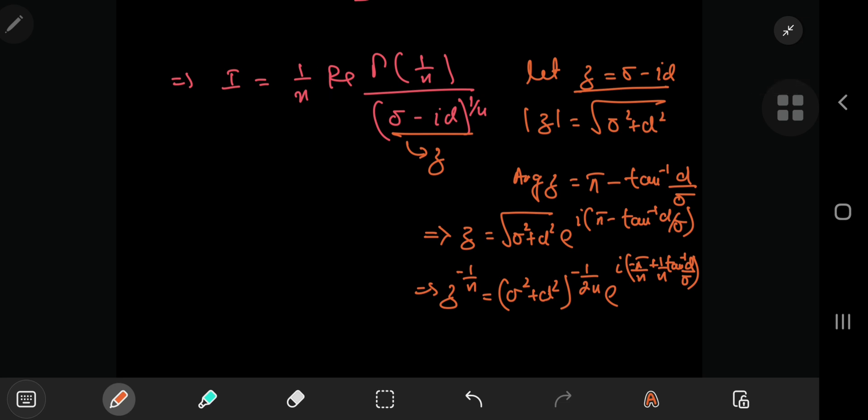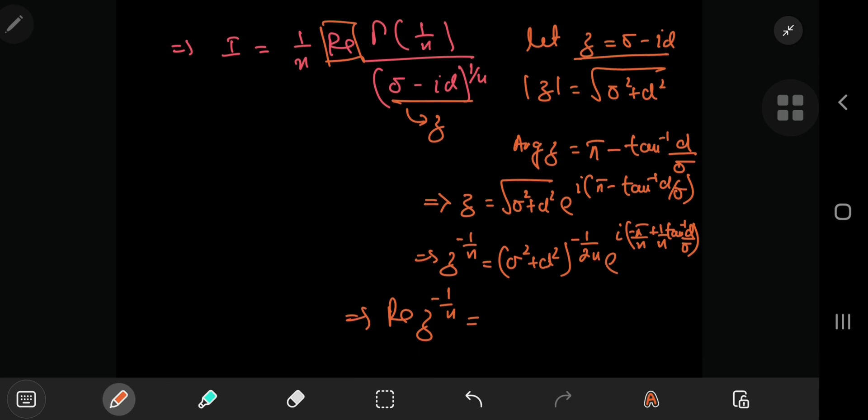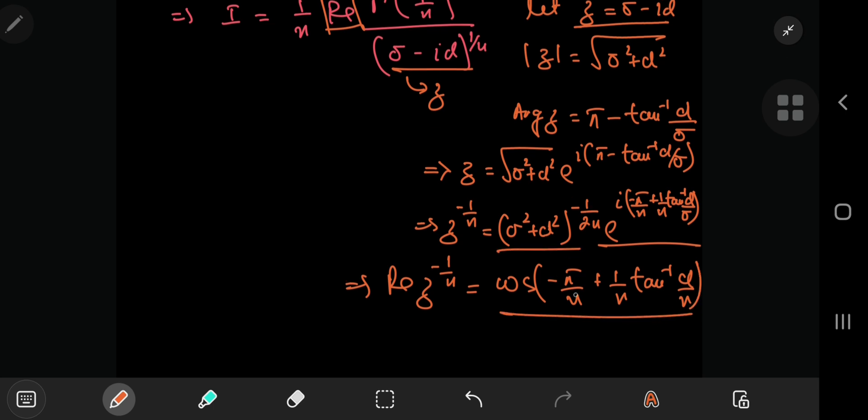And we're interested in the real part. So taking the real part of z to the negative 1 by n, we're left with... we can write this in a better, in a more presentable way. But first up, the real part of the complex exponential is the cosine term, of course. So we have the cosine of negative pi by n plus 1 by n times the inverse tangent of alpha by n. And we can write this in the denominator as sigma squared plus alpha squared to the 1 by 2 n.